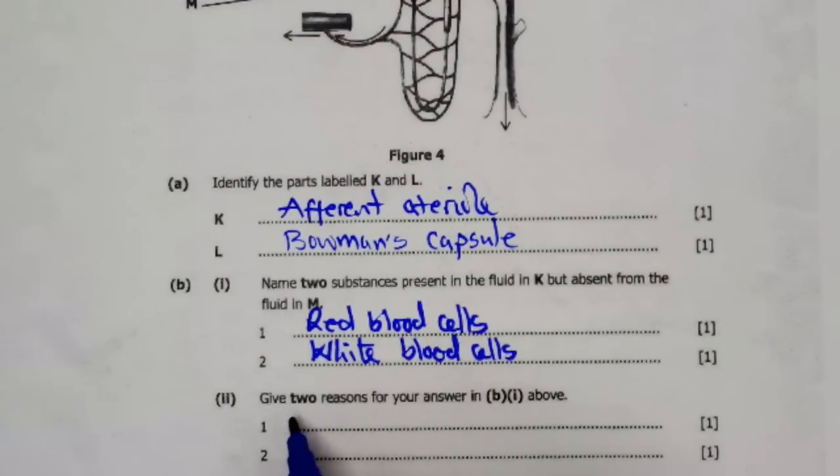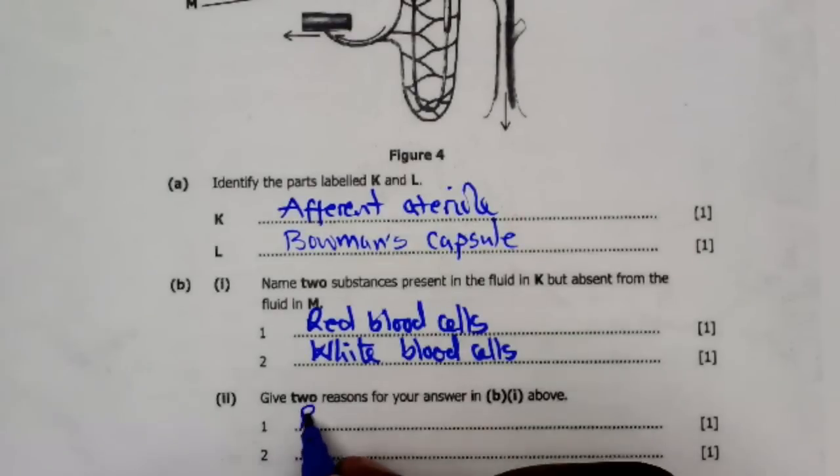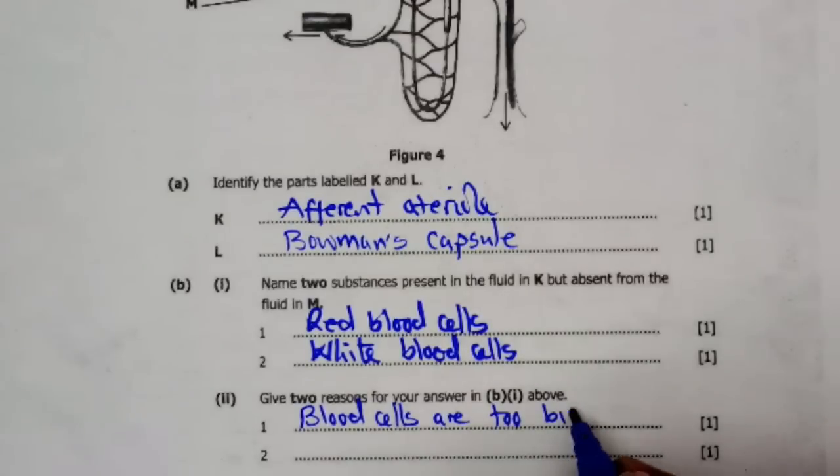B2: Give two reasons for your answer in B1 above. Blood cells are too big to pass through the walls of the glomerulus which are too thin. Hence, ultrafiltration takes place.